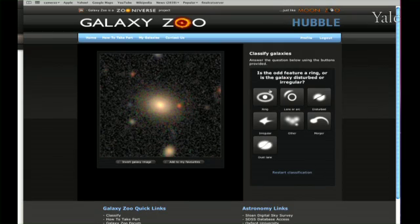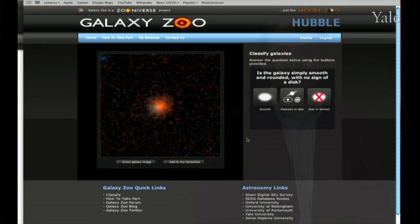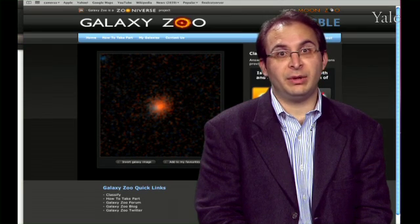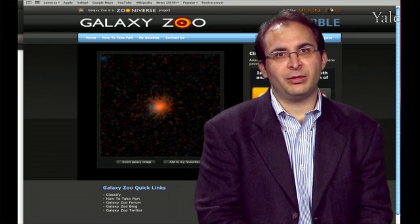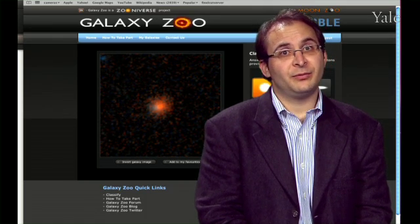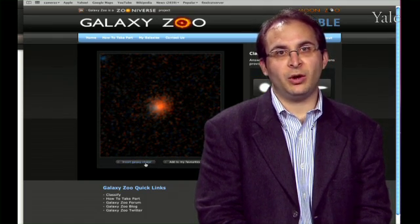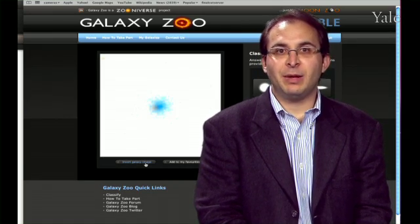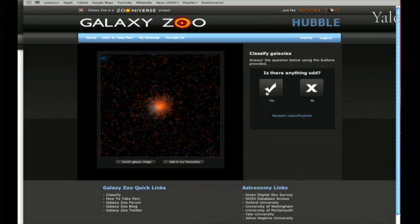When we launched the original Galaxy Zoo, we thought that maybe there's a few dozen or a hundred, or maybe if we're really lucky, a few thousand people across the internet who'd be interested in doing this. Our expectations for how long it would take us to sort through a million galaxies were very low. We thought it would take many years. Instead, when we launched the website in 2007, within a few hours so many people had logged on wanting to classify galaxies that it actually melted one of our servers and the website was knocked offline. Galaxy Zoo has been a huge success over a span of almost two years. Every single one of these one million galaxies has been viewed more than 70 times by the Galaxy Zoo users.